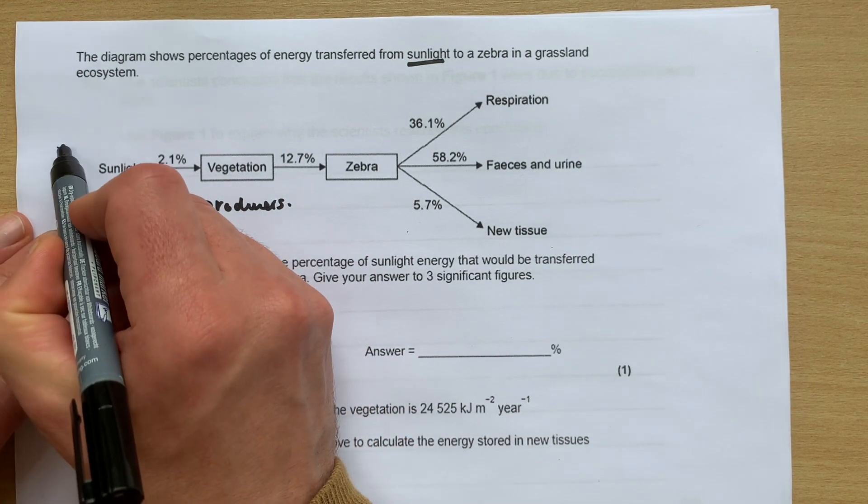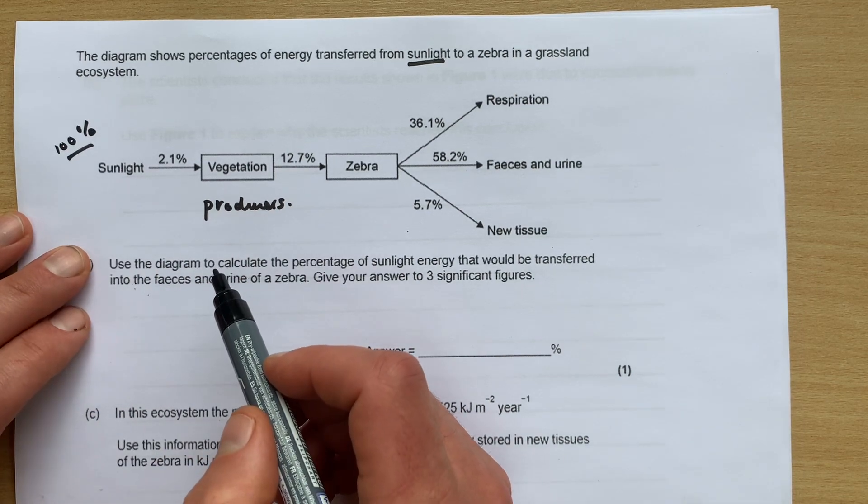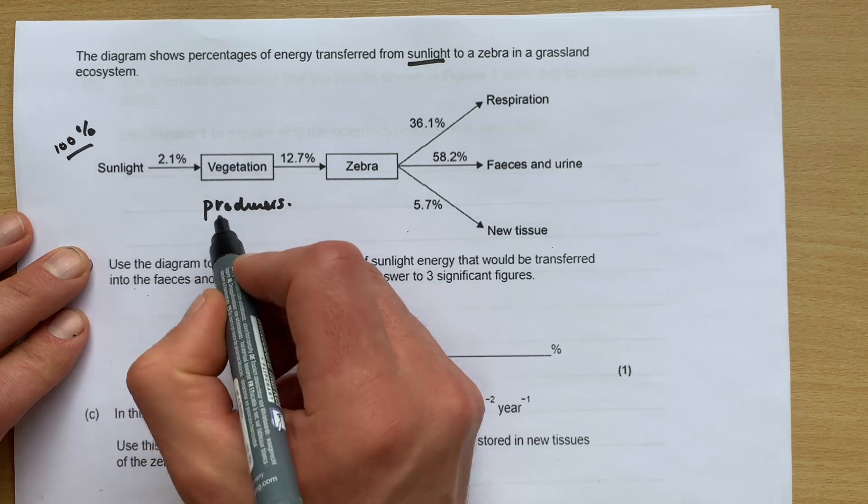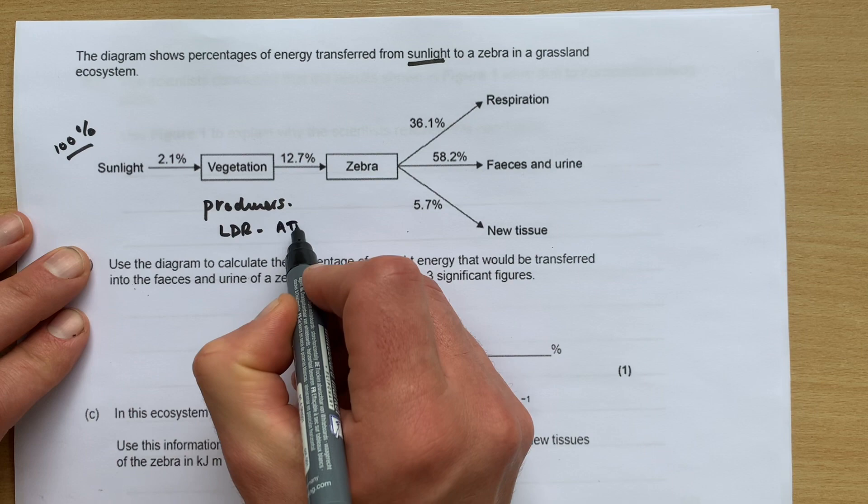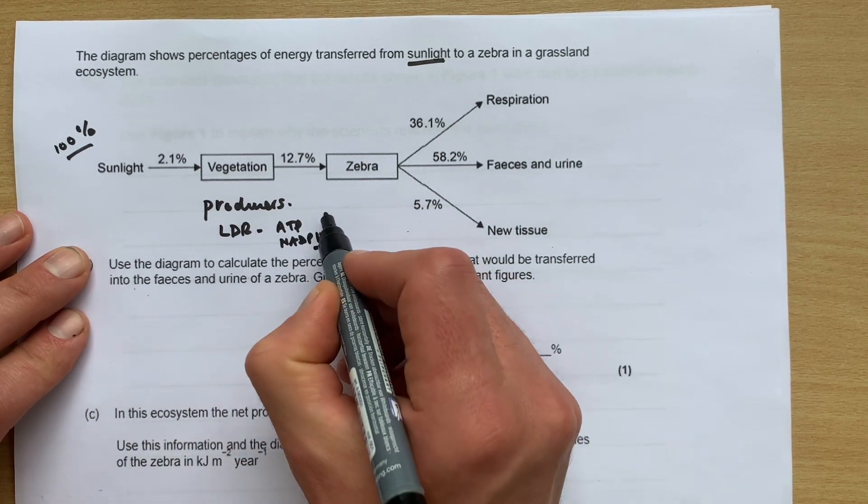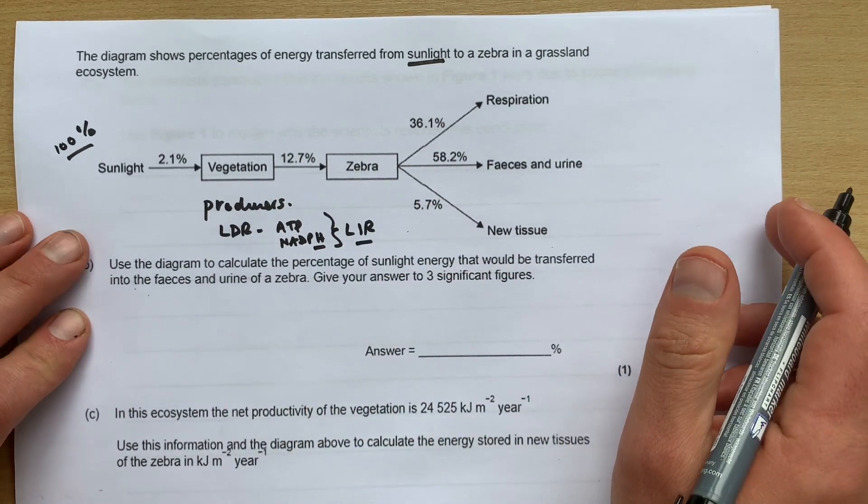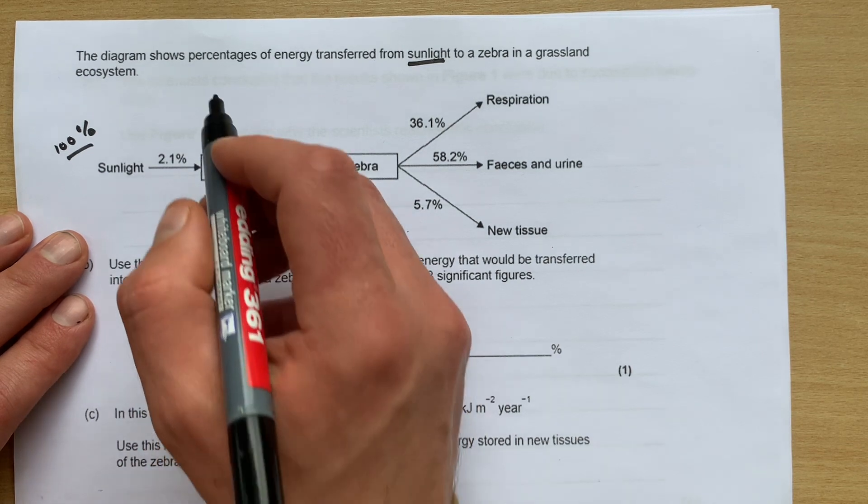They're going to absorb 2.1 percent of the sunlight. So imagine we put here 100 of the sunlight falls on a plant, 2.1 percent of that 100 is absorbed to be used in light-dependent reactions. Then we know ATP and NADPH are going to be used to make glucose via the light independent reactions.